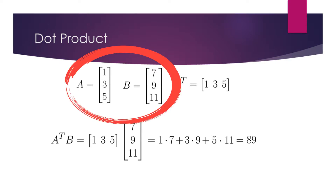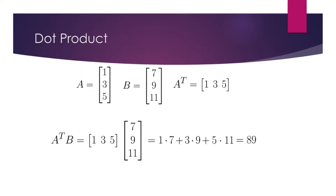Let's consider the vectors A and B. The first step towards obtaining the dot product of these vectors is to obtain the transpose of one of the vectors. Let's write down the transpose of A.